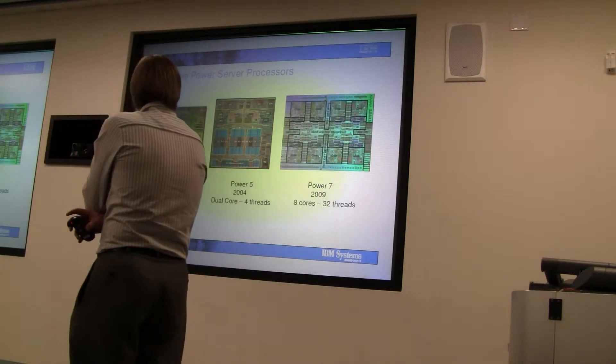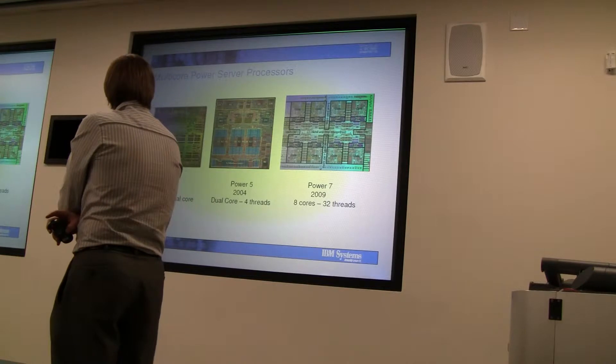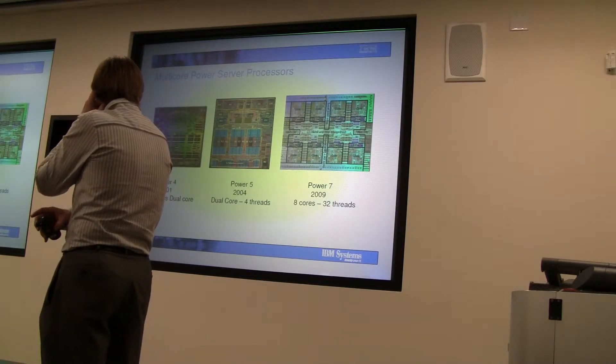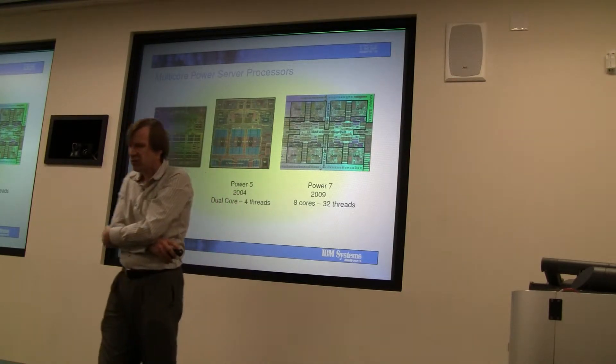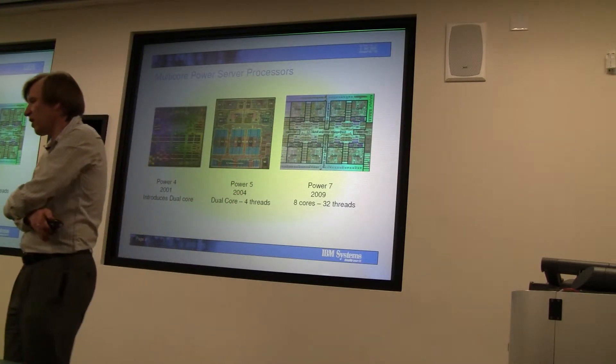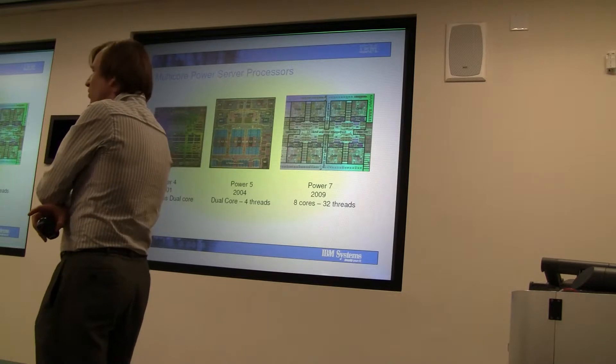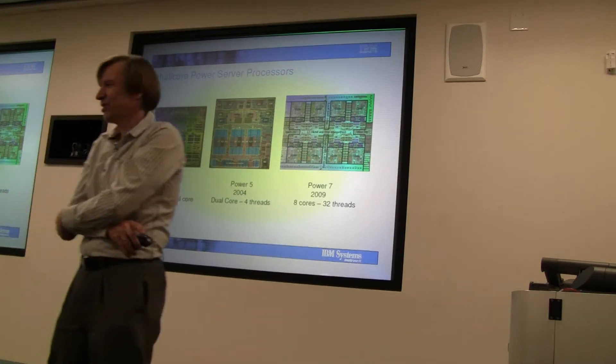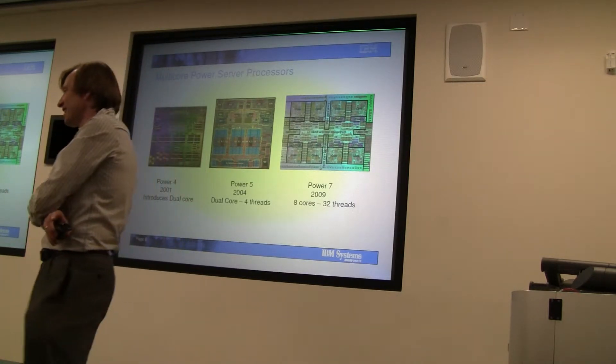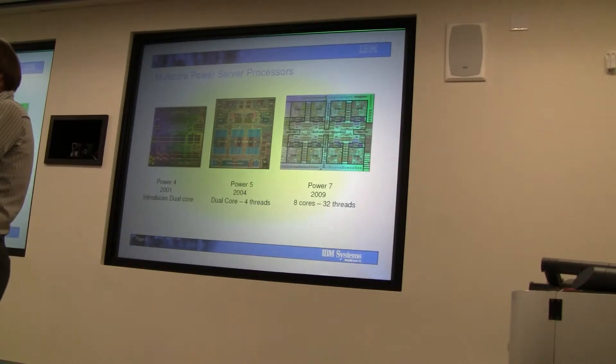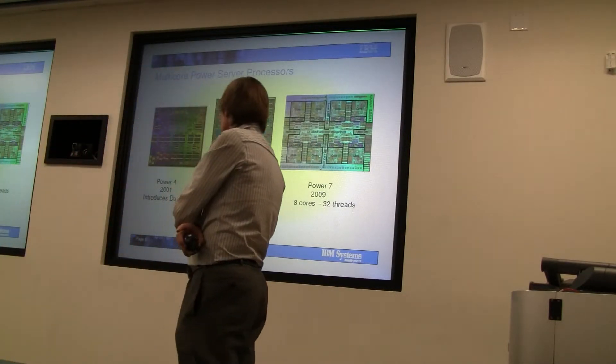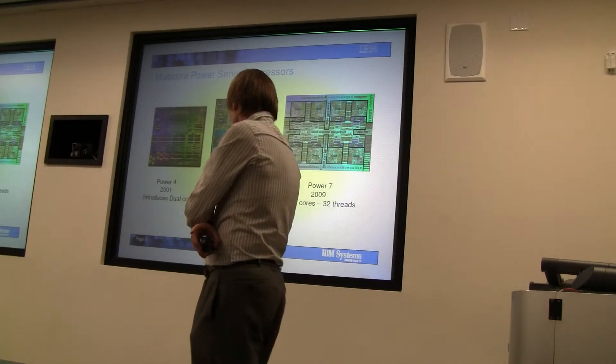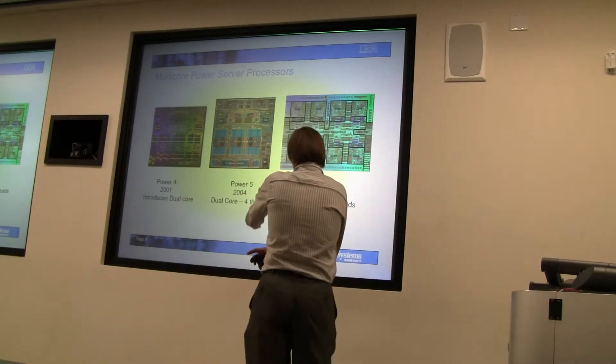We've gone this multi-core route. This is an IBM example - we actually started pretty early. We introduced a dual core processor in 2001, not necessarily because we're smarter than everybody else, but if you build server processors, you run into this problem a little bit sooner than if you're building processors for PCs.